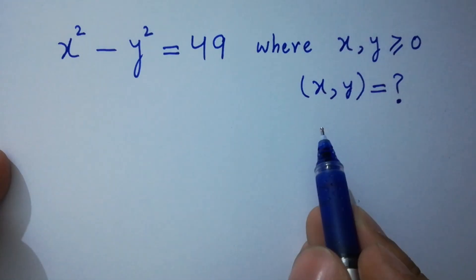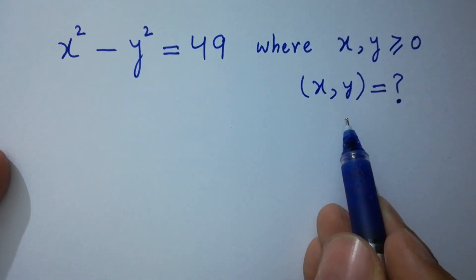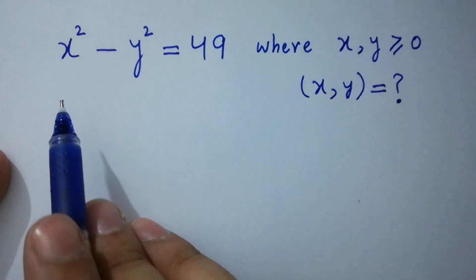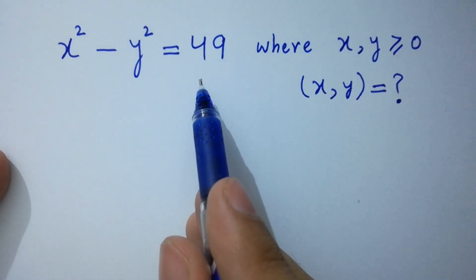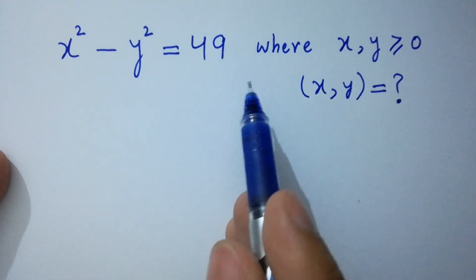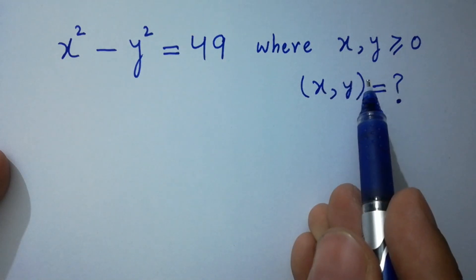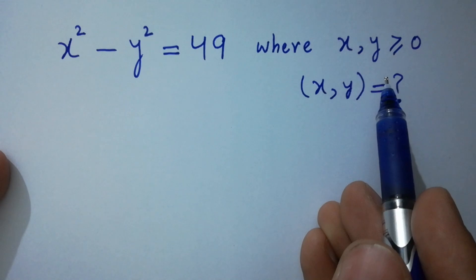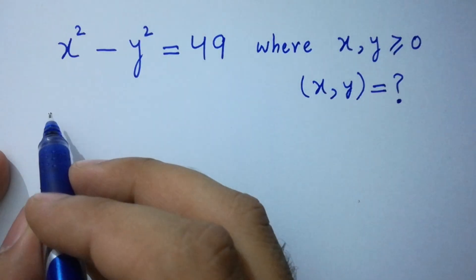Hello friends. Find the value of x and y if x squared minus y squared equals 49, where x and y are greater than or equal to 0 — that is, positive values. Let's have a solution.